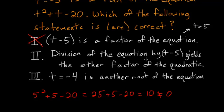And then number 2, division of the equation by t minus 5 yields the other factor of the quadratic. Now if t minus 5 was a factor, then the second one would be true. But since it's not a factor, division of the equation by it will not yield the second factor. So we know that this isn't true as well.